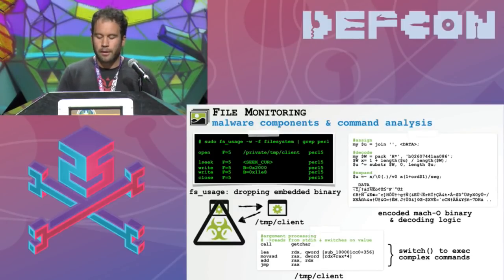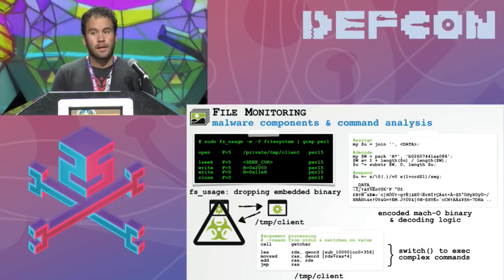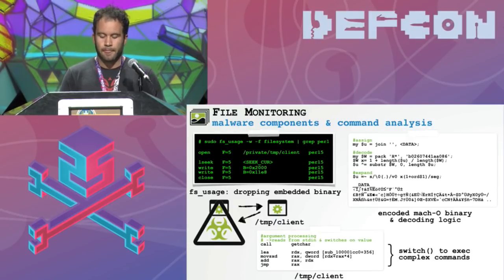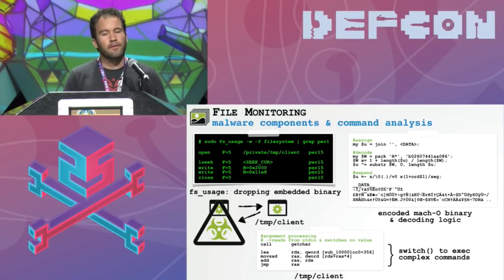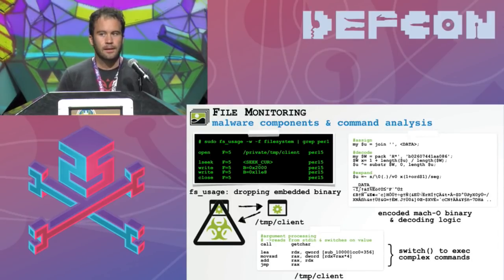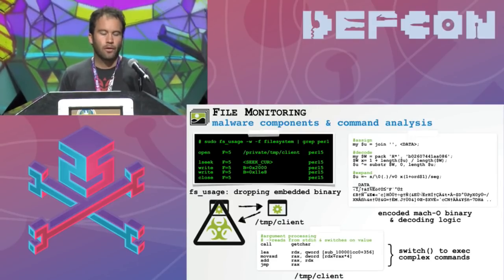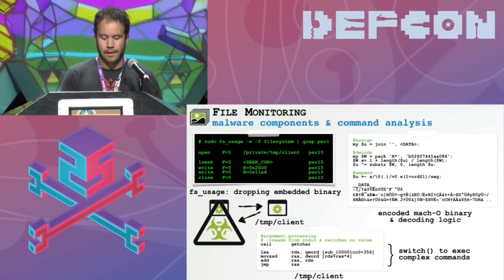Next up we have file monitoring. We can use the built-in FS usage utility, a Mac OS utility that allows you to monitor file IO events. We'll see that various commands when you task the malware will cause it to drop or save the embedded Mach-O binary, and we can see from the file monitor it's saved to /tmp/client. So now we can grab that binary and do some analysis, though we actually don't have to fully reverse engineer it because we'll reveal its capabilities just via tasking.